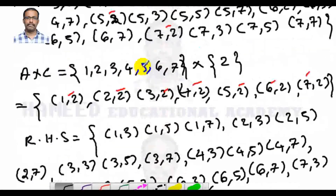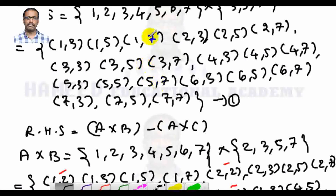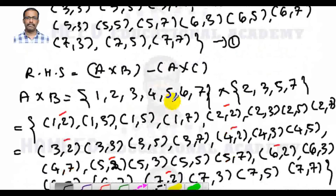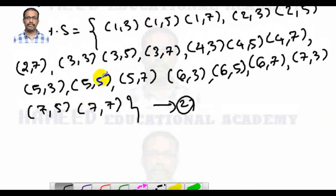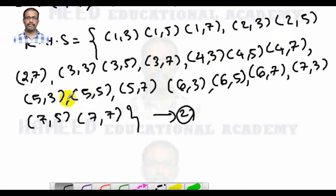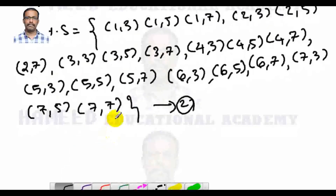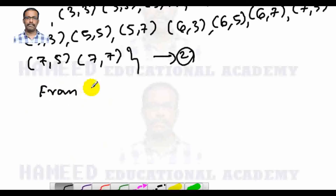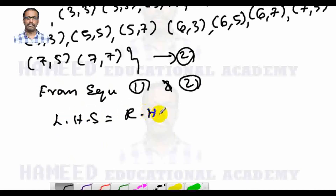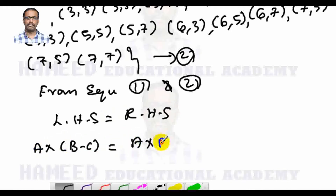From equation 1 and equation 2, both sides contain the same elements: (1,3),(1,5),(1,7),(2,3),(2,5),(2,7),(3,3),(3,5) up to (7,7). Left-hand side equals right-hand side. Therefore A × (B - C) = (A × B) - (A × C). Hence proved.